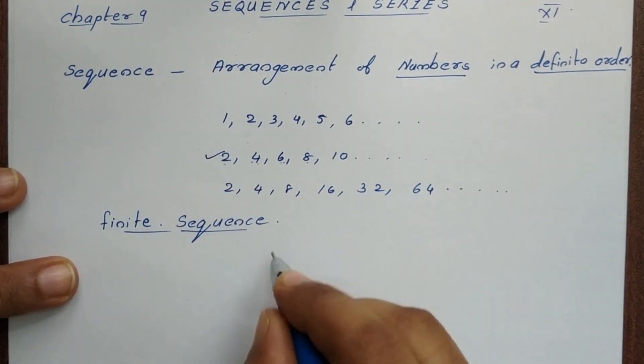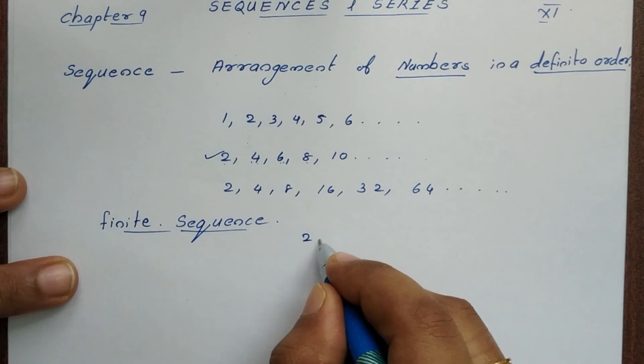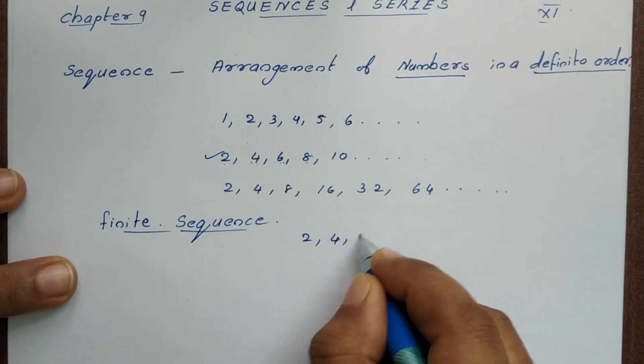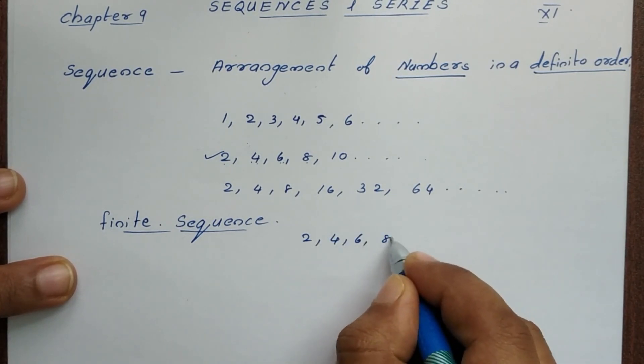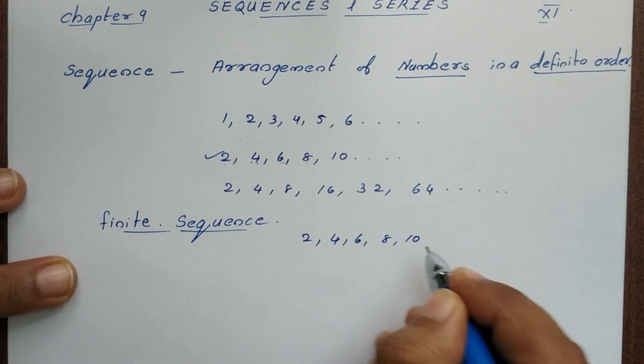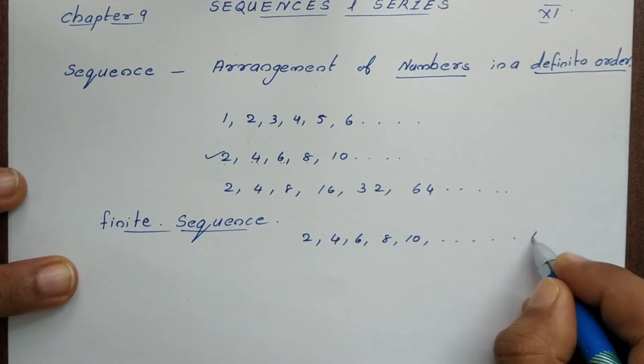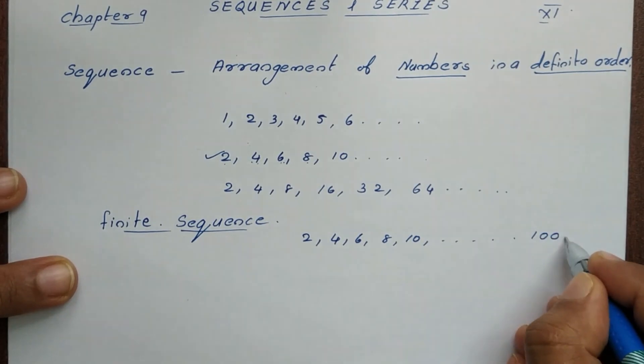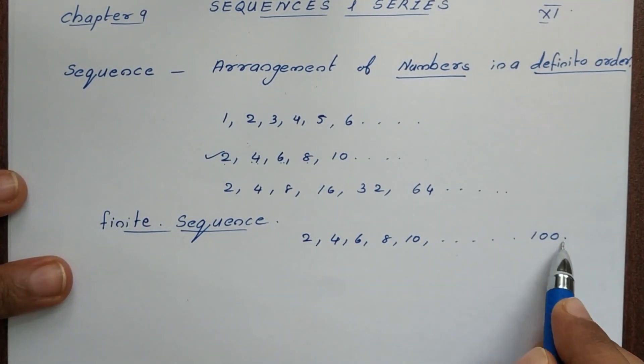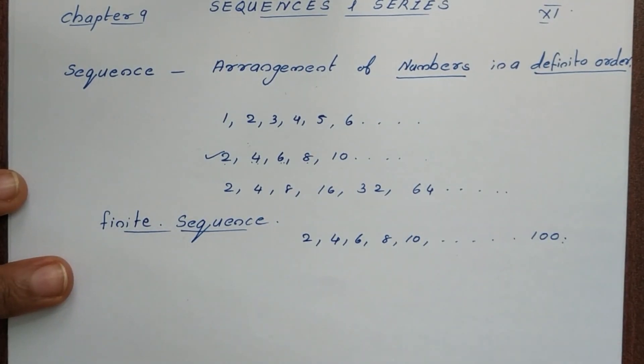For example, take 2, 4, 6, 8, 10, etc. If we write up to 100, that is a finite sequence — it has a definite number of terms.